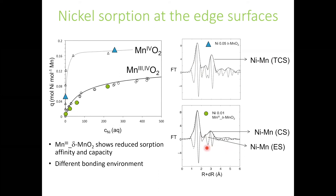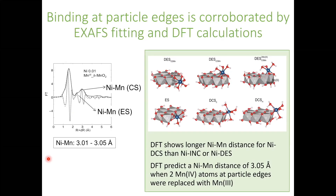In the Mn(III)-rich oxide we have a really different spectrum. In the Fourier transform, we see two peaks that emerge as important: one is a corner-sharing species with a similar distance to the one at the vacancy sites, and a second is an edge-sharing species. We see that nickel has different bonding environments when adsorbed onto these two different preparations of delta MnO₂. We wanted to understand if this decreased peak amplitude and different distance, especially for the edge-sharing species with a peak between 3.01 and 3.05 Å, would be evidence for nickel binding at the particle edges.